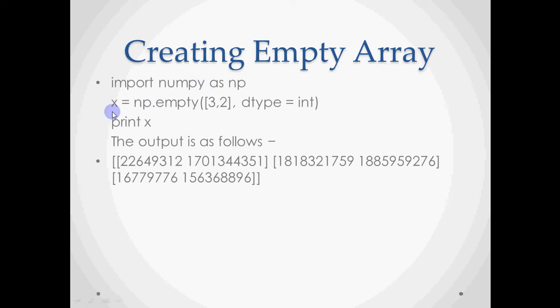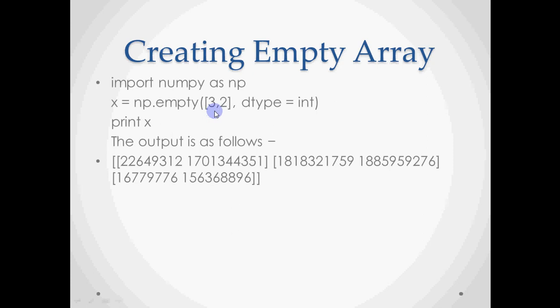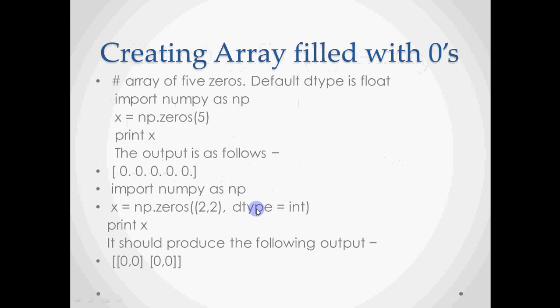Here I have written 'import numpy as np', then 'x = np.empty((3, 2), dtype=int)'. I have said I need a 3 by 2 integer array. When printed, you will see three rows and two columns — but these are all garbage values because no memory is truly empty; it contains whatever was previously stored there. So np.empty creates the array size but fills it with garbage values.